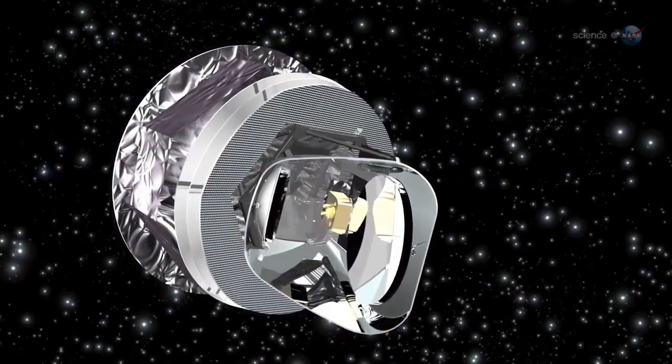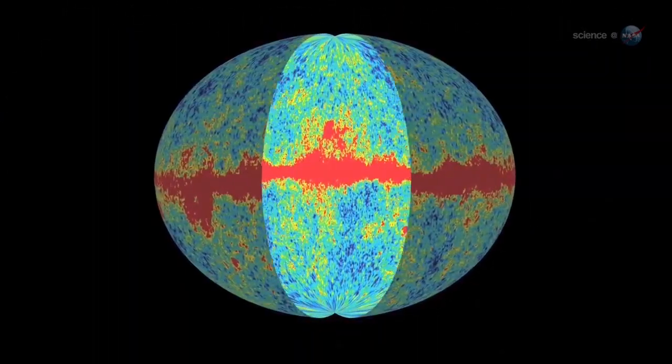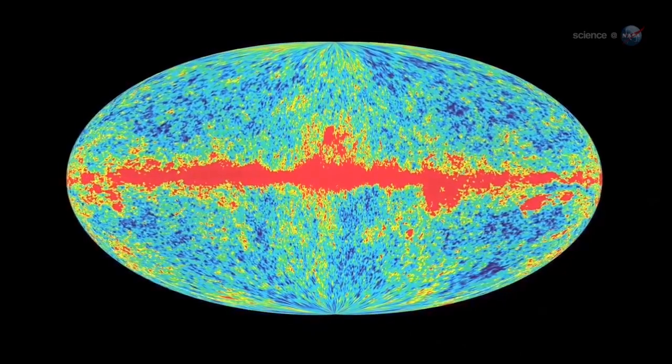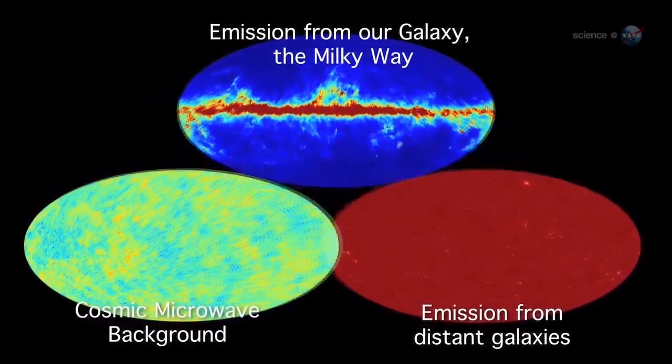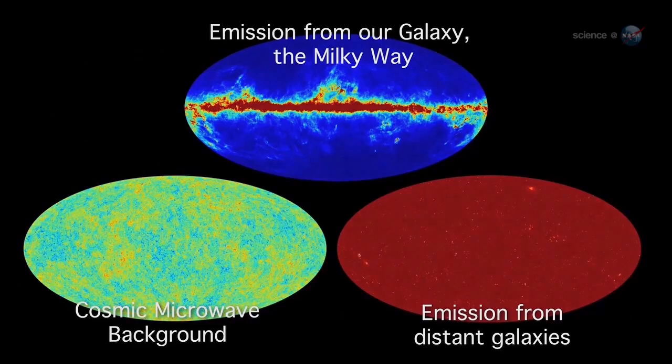In late 2013, Planck wrapped up a four-year mission to study the cosmic microwave background radiation, the afterglow of the Big Bang. To study the cosmic microwave background, Planck had to unravel everything in the foreground, and that includes microwave emissions from the Milky Way.